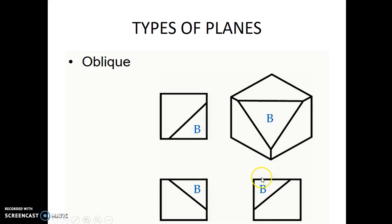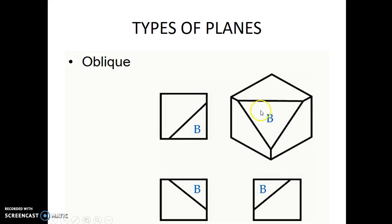Let us see an oblique surface. Surface B in this object is an oblique surface. If we take the surface and the projection lines towards the principal planes, this surface will be inclined to all the projection lines. The specialty of an oblique surface is that its view will be seen in all three: the top view, front view, and the side view.